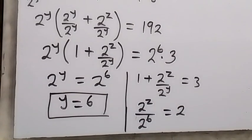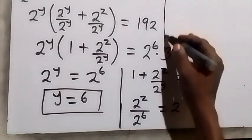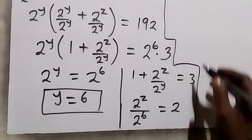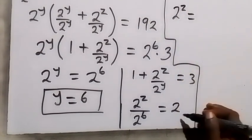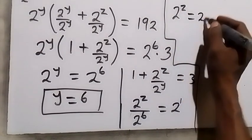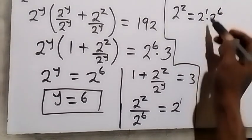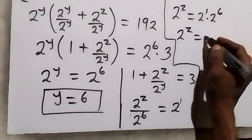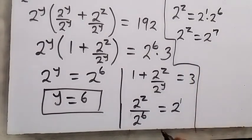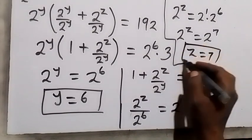From here we cross multiply: 2 raised to power z equals 2 raised to power 1 times 2 raised to power 6. Since they have the same base, we add the powers: 2^z equals 2 raised to power 7 (1 plus 6 is 7), so z equals 7.